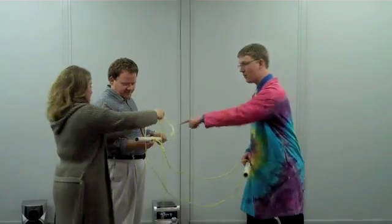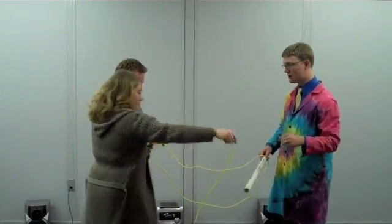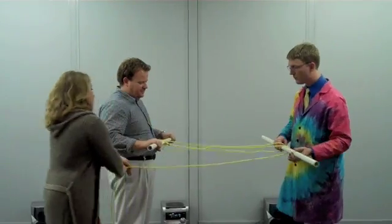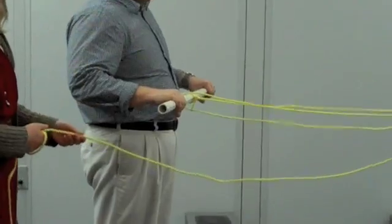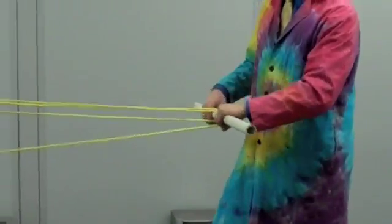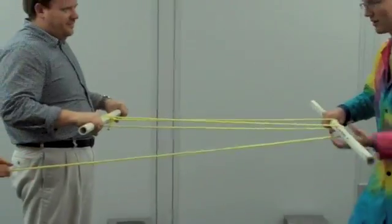So what you do is you wrap the rope around the first one and then the second one. So now we have added an additional pulley. So there's two on my side, two on Eric's side, and let's see how this one works.